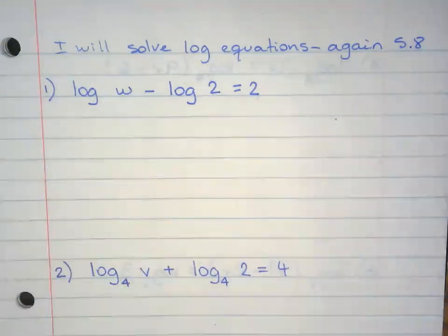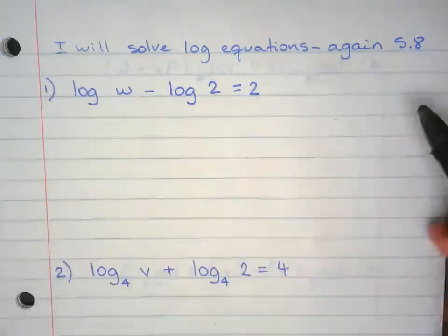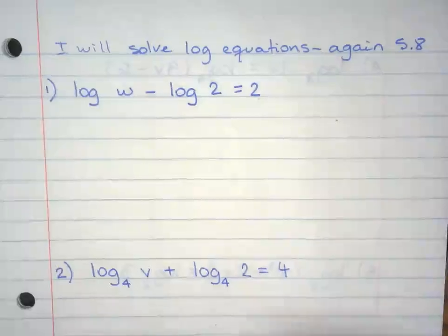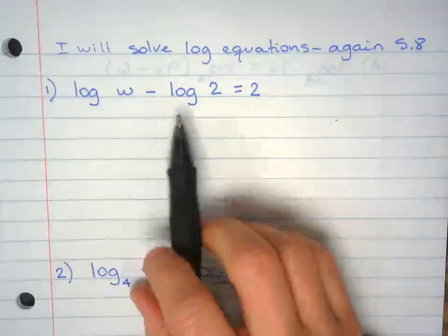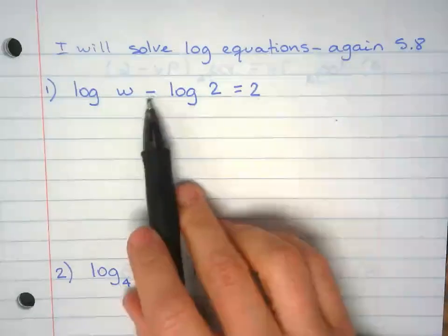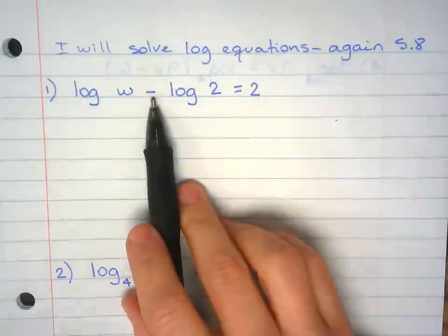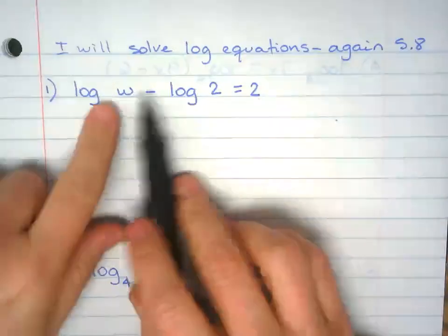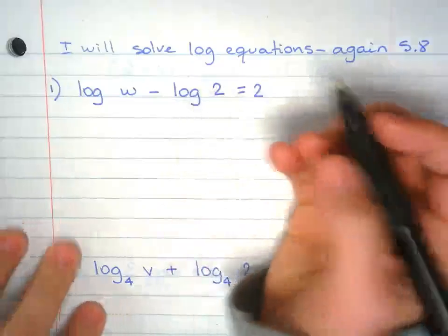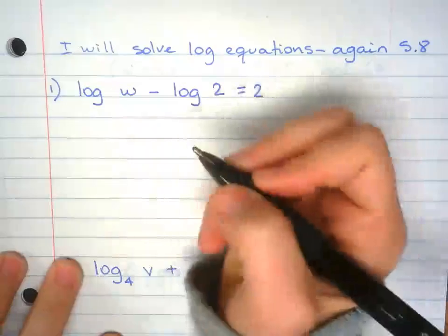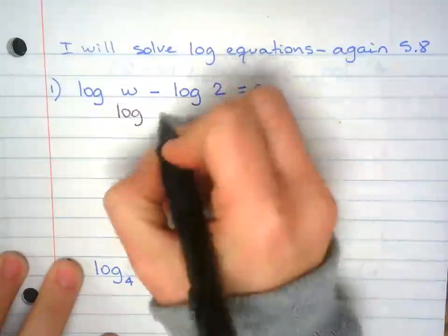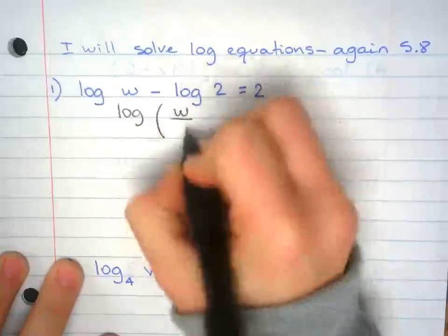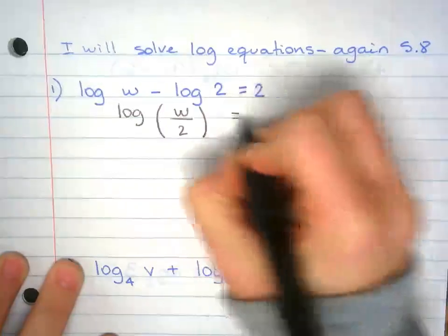We're solving log equations again. This is for Excel S8. For this one, we're going to apply the log properties. If you have a minus, you rewrite the log as a division, as a quotient. So rewrite this: log of w over 2 equals 2.